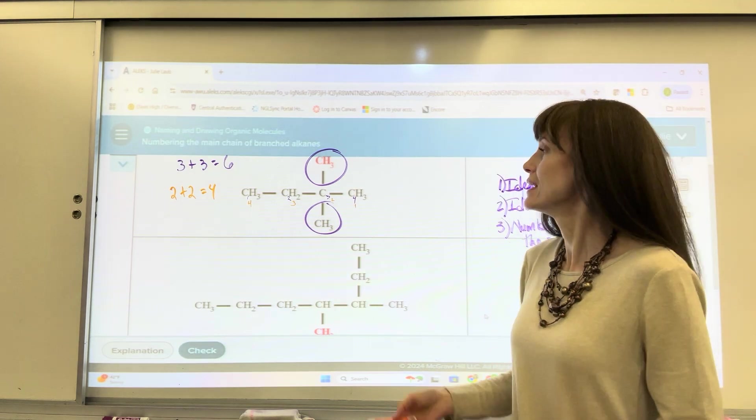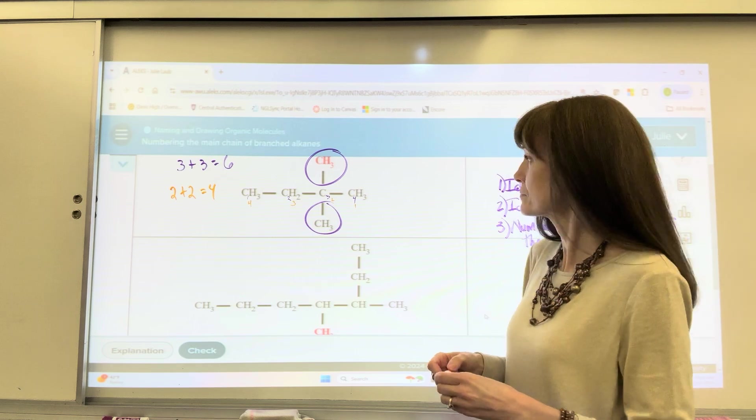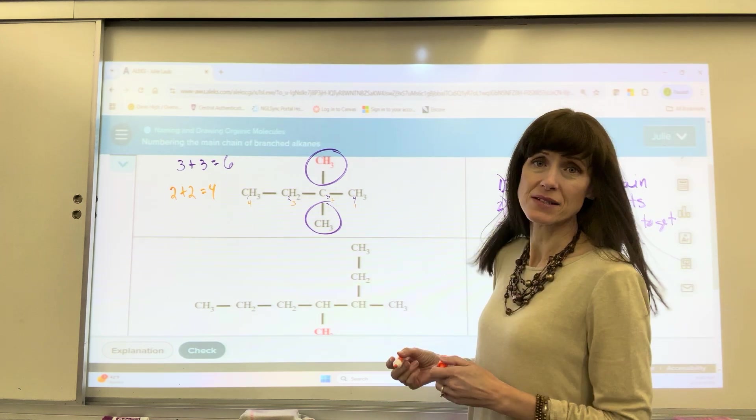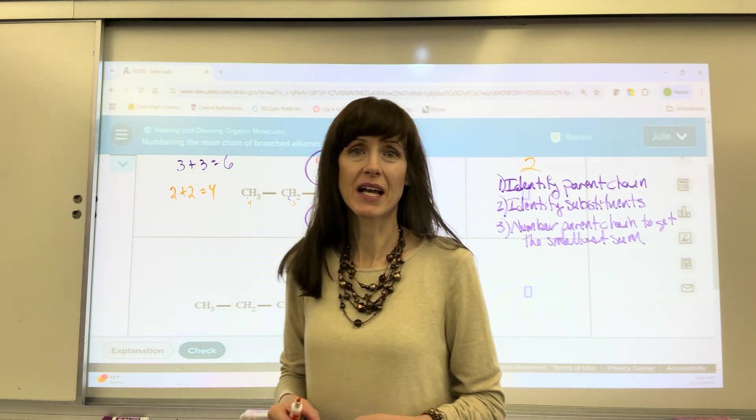The smallest sum is right to left, the 2, the 2 and the 2. So here, for this answer, all I would have to type in is the number 2. That's all I have to type in.